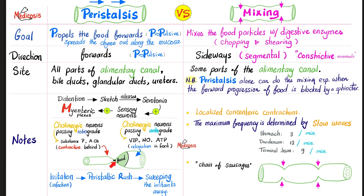How does contraction behind the bolus happen? Cholinergic neurons passing retrograde — backwards — secrete substance P and acetylcholine, which are pro-smooth muscle contraction, causing contraction behind the bolus. How do we relax in front? Cholinergic neurons passing antegrade — forwards — release vasoactive intestinal peptide, nitric oxide, and adenosine triphosphate, all of which cause smooth muscle relaxation in front of your chyme.